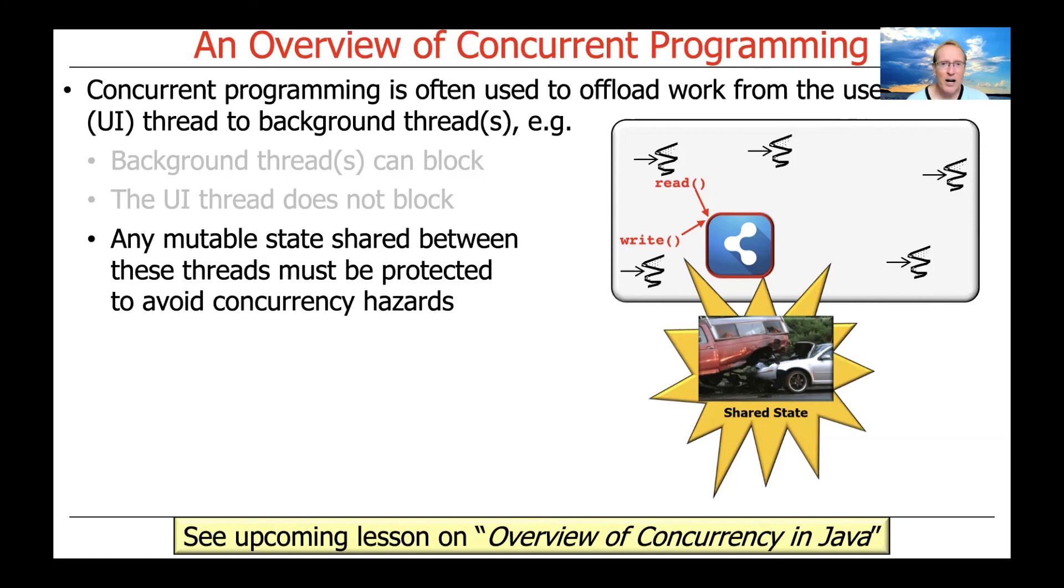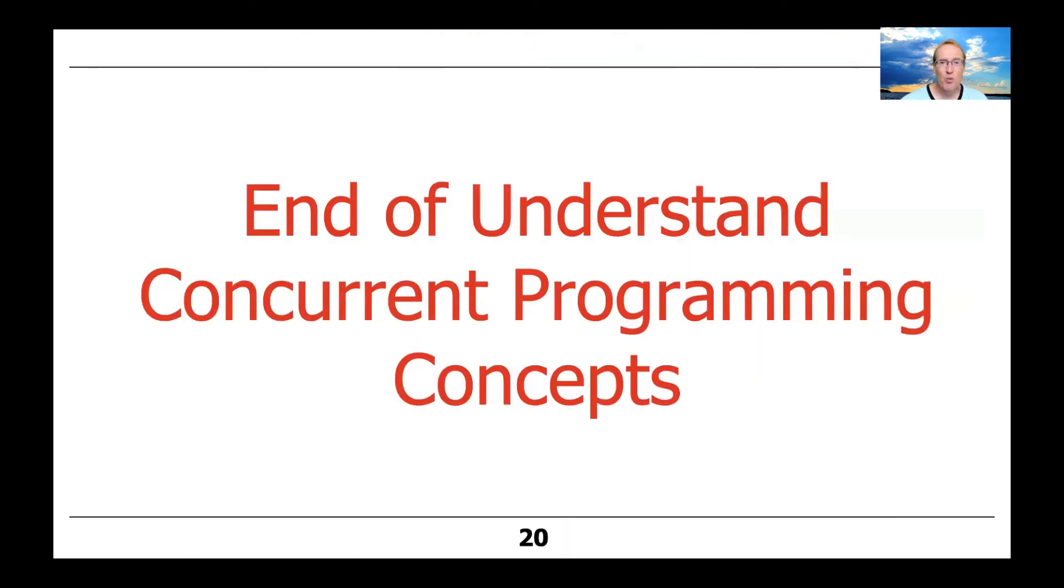For those of you who are Spider-Man fans, this can be summed up by the famous Spider-Man quote. I think it was actually his uncle Ben who said this, with great power comes great responsibility. And the same thing is true for concurrency and programming on multi-cores. You've got all this power, but you have to be responsible for using it correctly and wisely.